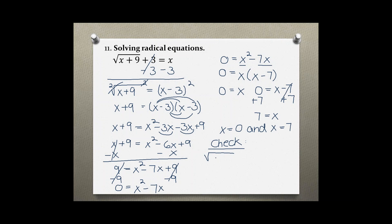So I'm going to plug it back in, and I'm going to start with 0 plus 9 plus 3 is equal to 0. So I have the square root of 9 plus 3 is equal to 0. The square root of 9 is 3 plus 3 is equal to 0.